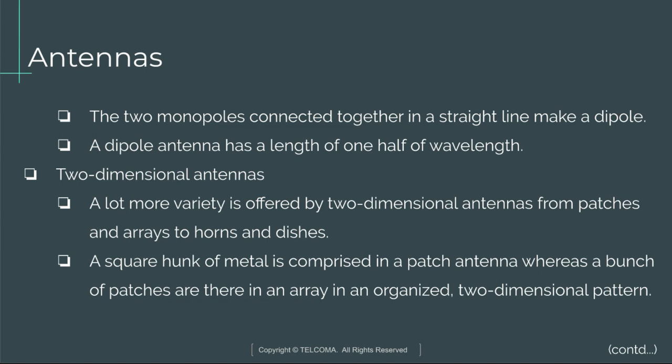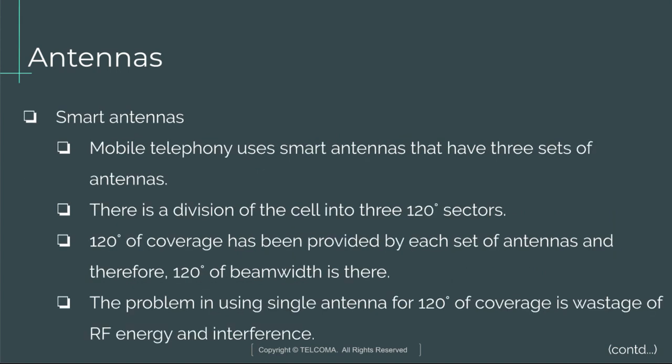Two-dimensional antennas offer a lot more variety, from patches and arrays to horns and dishes. A patch antenna is comprised of a square piece of metal, whereas an array consists of a bunch of patches arranged in an organized two-dimensional pattern.